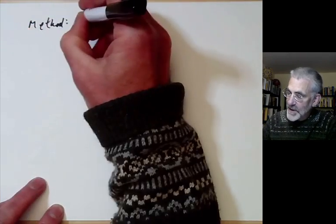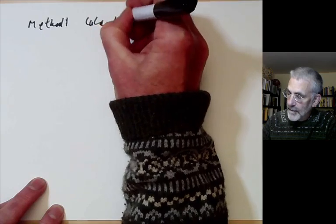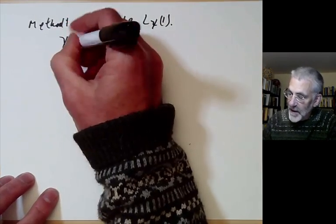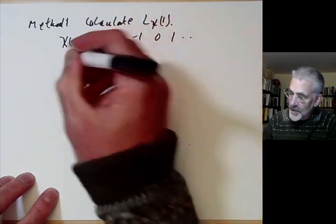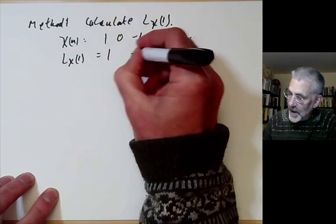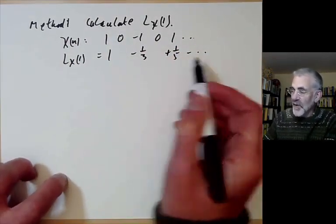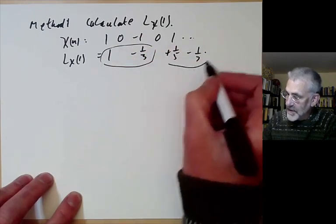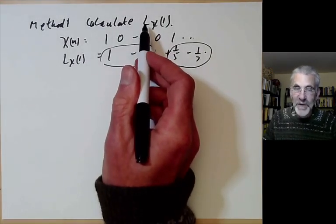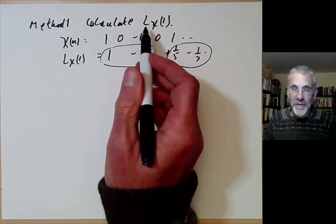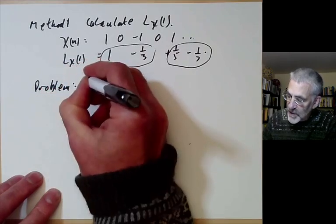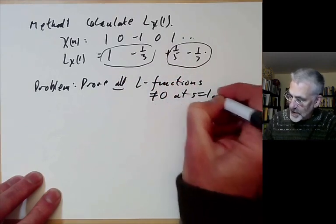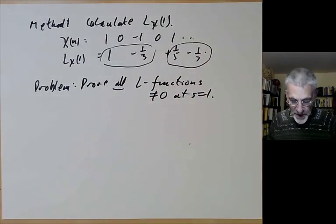Method 1 is quite easy: we can just calculate L(χ, 1) and check numerically that it's non-zero. For instance, if χ(n) is the function that goes 1, 0, −1, 0, 1, ... then L(χ, 1) = 1 − 1/3 + 1/5 − .... We can see this is non-zero either by calculating it explicitly and noting it equals π/4, or by noting that the sum of the first two terms is positive, the sum of the next two is positive, and so on. For any particular L-function there's no real difficulty proving it doesn't vanish at s = 1; the problem is to prove that all L-functions are non-zero at s = 1.